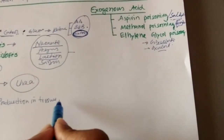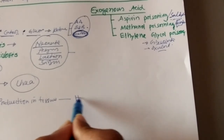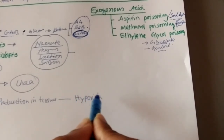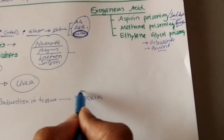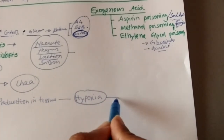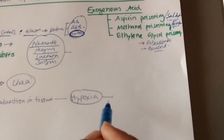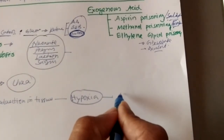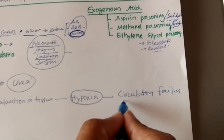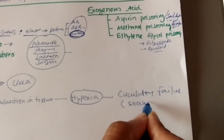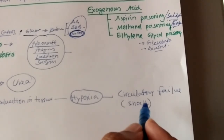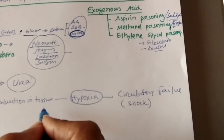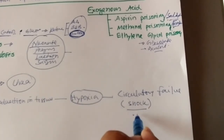If there is any degree of tissue hypoxia, that hypoxia leads to anaerobic glycolysis and from that, lactic acid is produced. The hypoxia that produces lactic acidosis is usually profound circulatory failure — called shock. Virtually any type of shock can lead to circulatory failure with hypoxia and subsequent lactic acidosis. For example, heart failure — such as acute left ventricular failure from myocardial infarction.